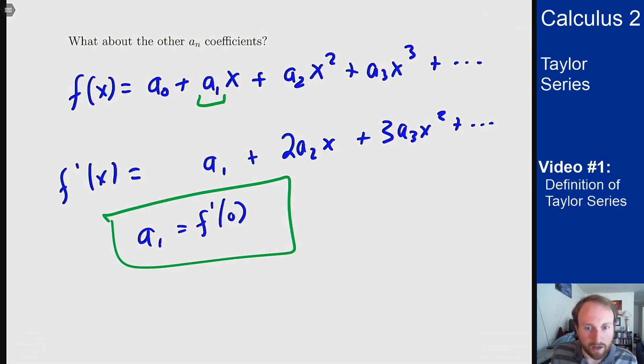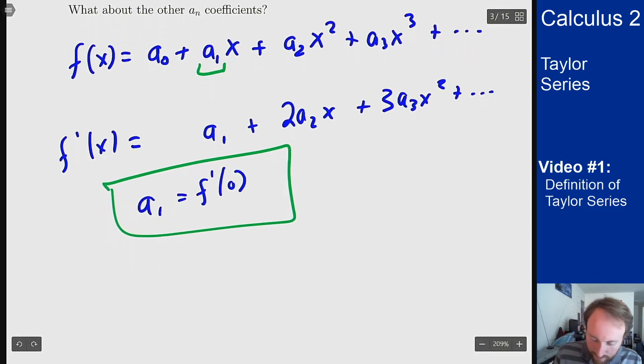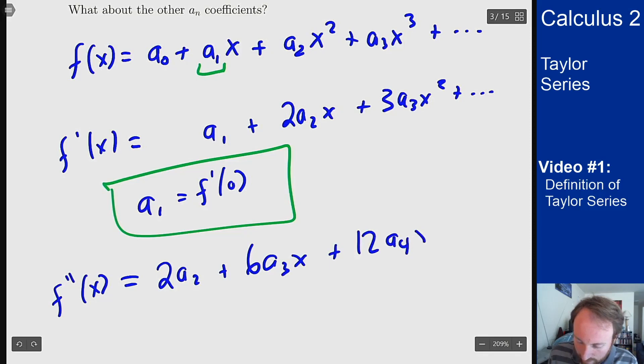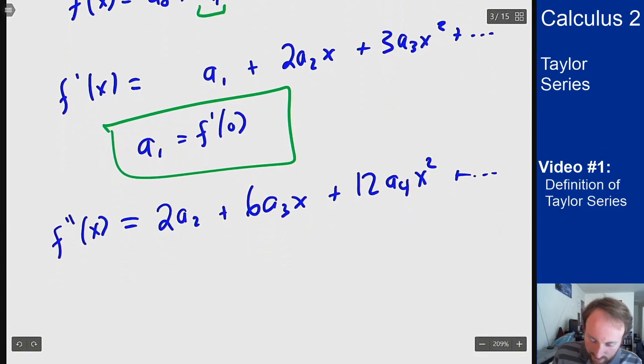If I differentiate one more time I'll then have a_2 that I can solve for. f double prime will start with 2a_2 plus 6a_3 x plus 12a_4 x squared and so on. So if I plug in zero to this one I can then solve for a_2. So a_2 should be f double prime at zero divided by 2 because I have this extra 2 from in front.